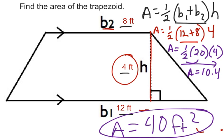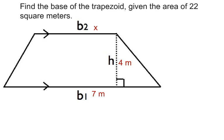When we have a problem like this, it's a little less challenging than when we have to find a missing base. That's our hardest. So, the first step, we always want to rewrite the formula. Area equals half of the base 1 plus the base 2 times the height.